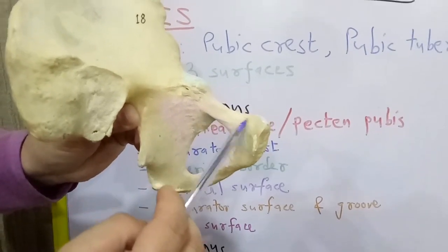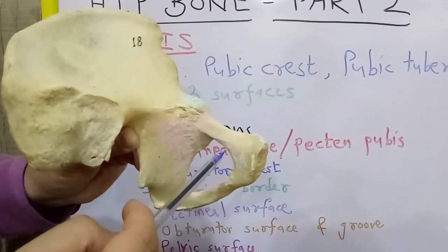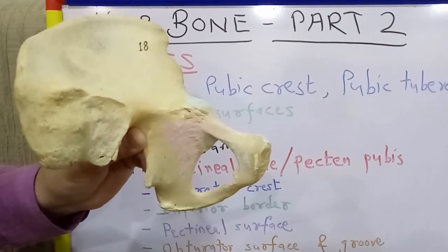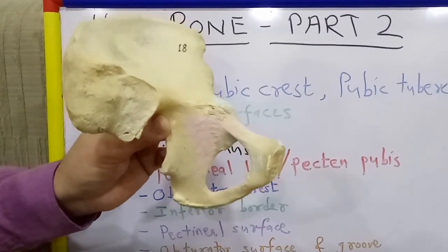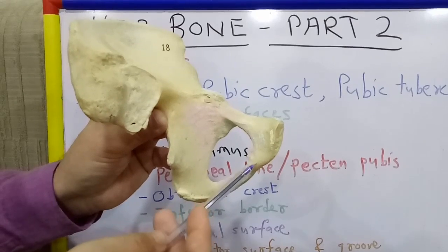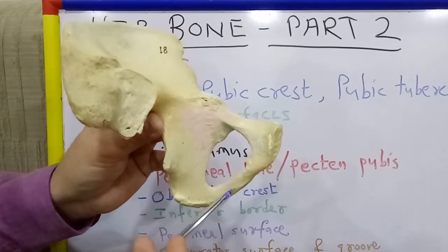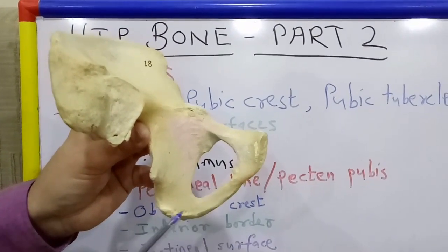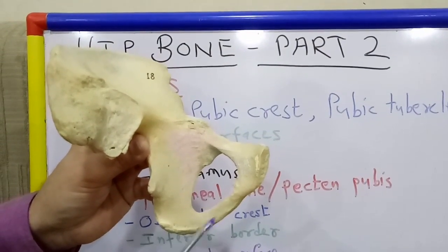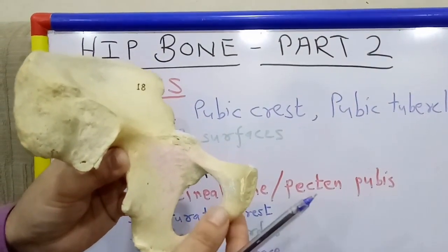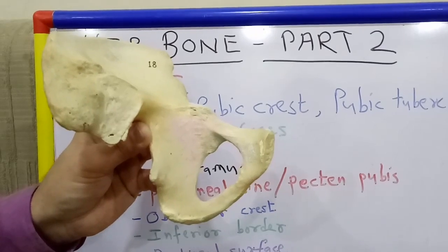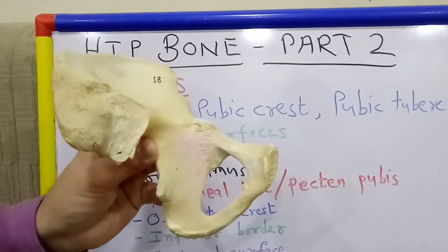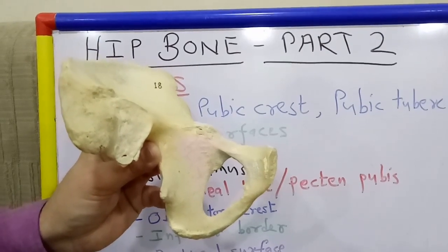The pelvic surface is crossed by the vas deferens in the male and the round ligament of uterus in the female. Coming to the inferior ramus: the inferior ramus of pubis unites with the ramus of ischium and forms the conjoint ischiopubic rami, the attachments of which will be demonstrated in the last session along with the ischium.